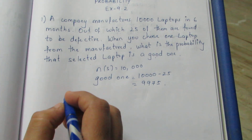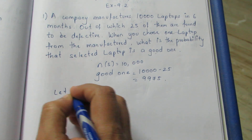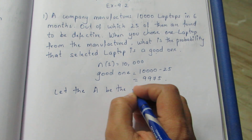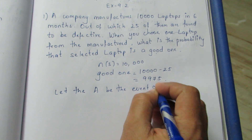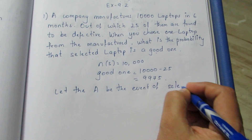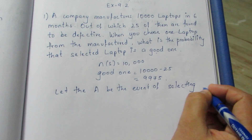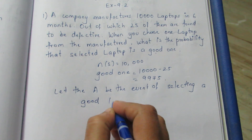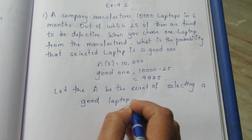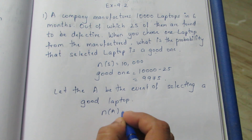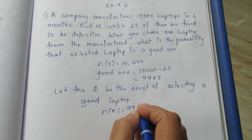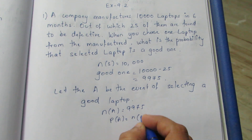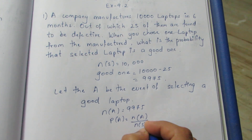Let A be the event of selecting a good laptop. n of A is equal to 9975, since 10,000 minus 25 defective gives 9,975 good laptops.